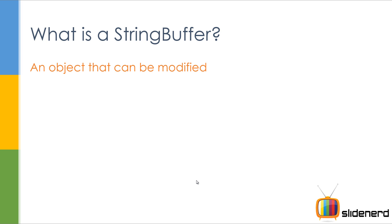Now why would you need that? You're making a new object every time you modify a String — that's a waste of memory. What about the old object? That's additional memory. So whenever you have some piece of text that needs to be modified again and again, like a Word document or something like that, you can use String Buffer.